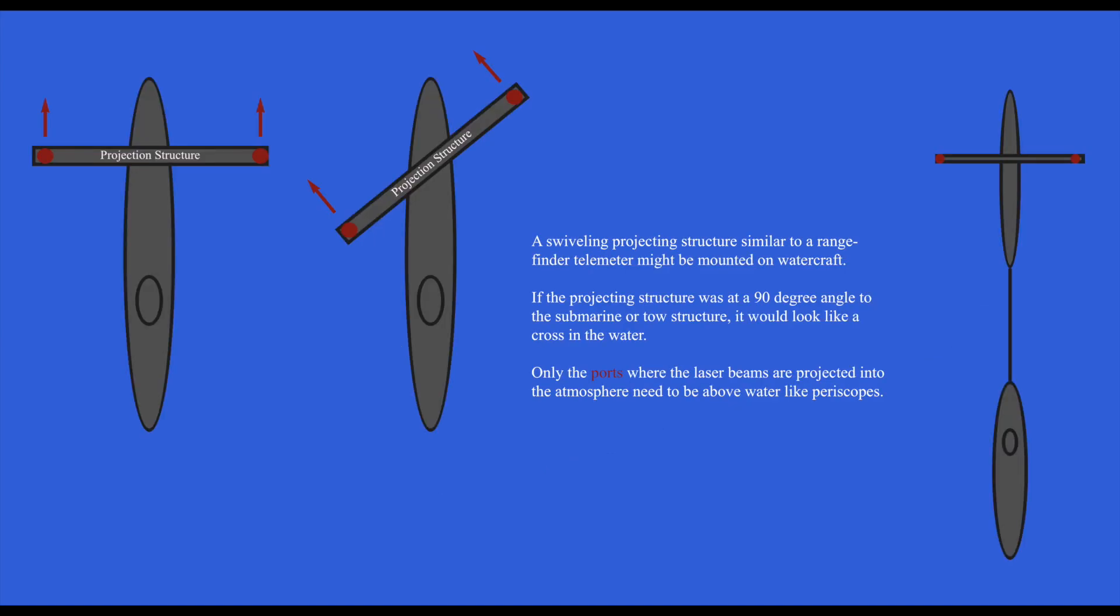A swiveling projecting structure, similar to a rangefinder telemeter, might be mounted on watercraft. If the projecting structure was at a 90-degree angle to the submarine or tow structure, it would look like a cross in the water. Only the ports where the laser beams are projected into the atmosphere need to be above the water, like periscopes.